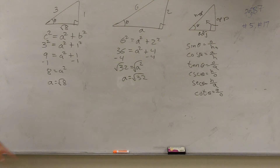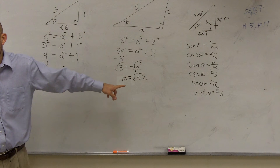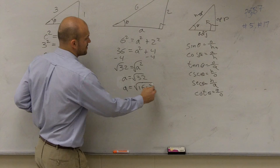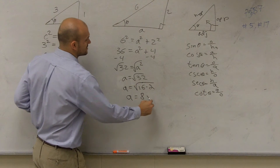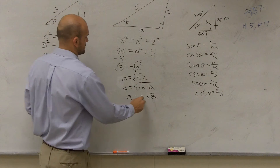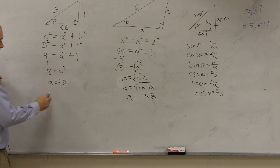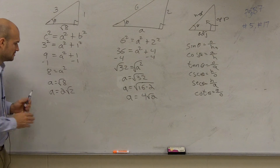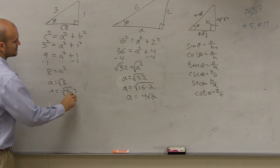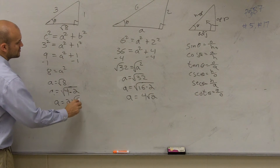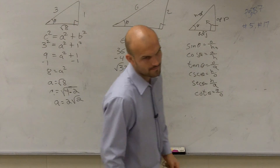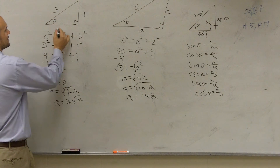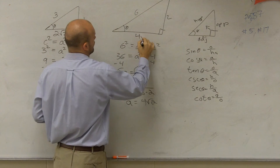Now, you're going to want to make sure you can simplify these square roots. If I simplify the square root of 32, I can rewrite that as the square root of 16 times 2, so a equals 4 square root of 2. Similarly, the square root of 8 can be rewritten as the square root of 4 times the square root of 2, and taking the square root of 4 gives 2 square root of 2. So the two sides are 2 square root of 2 and 4 square root of 2.